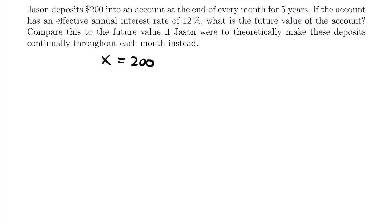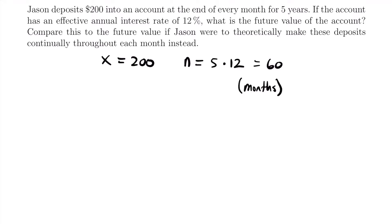To figure out our number of payment periods, we have five years, and these $200 deposits are being made every month for those five years. So N, the number of payment periods, will be equal to five years times 12. If Jason is depositing $200 every month for five years, multiplying those five years by 12 months per year gives us a total of 60 months. For the interest rate, we're told the account has an effective annual interest rate of 12%, so I equals 0.12.